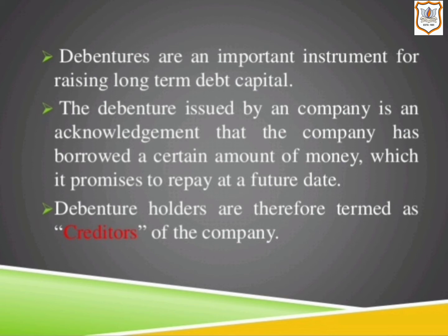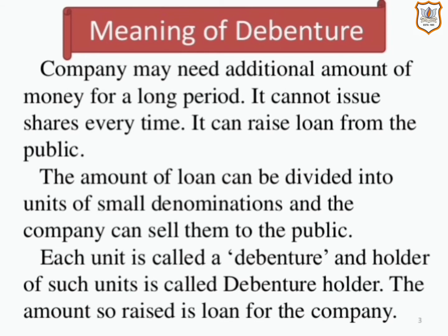In addition to borrowing from financial institutions, for large investment a company can raise funds from the public by issue of securities. Such a security is popularly known as debentures or bonds. A debenture is an instrument issued under the common seal of the company, acknowledging a debt, and is a contract for the repayment of the principal sum at a specified date and for the payment of interest at a fixed rate per cent until the principal sum is repaid. Each unit is called a debenture and the holder of such units is called a debenture holder.